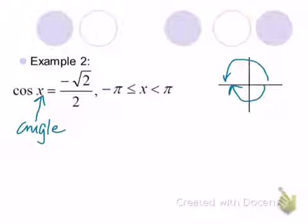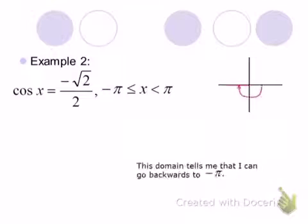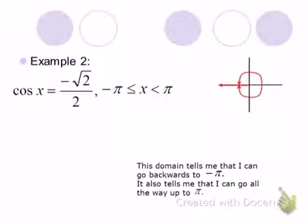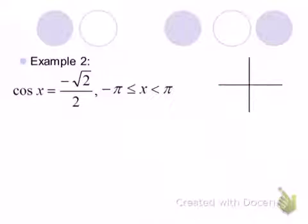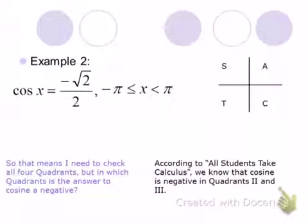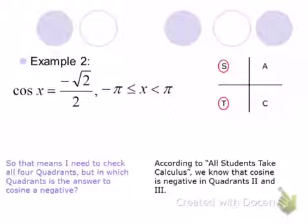We're still going to ask ourselves the same questions. What is the reference angle that has a cosine value of square root of 2 over 2? The reference angle is pi over 4. Because the cosine is negative, what quadrants are we going to place that value in? Quadrant 2 and quadrant 3, because the cosine is positive in quadrant 1 and quadrant 4.